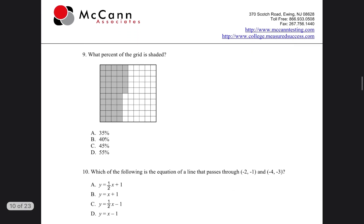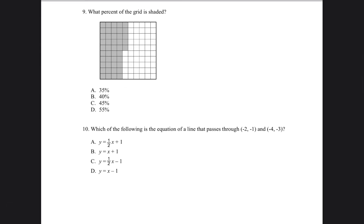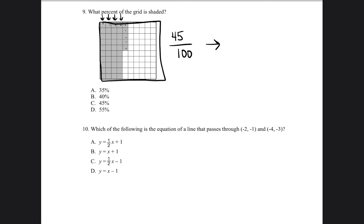Let's go to number 9, our last two questions: what percent of the grid is shaded? Each of these bars is equal to 10 — so 10, 20, 30, 40 — and then we count individually: 1, 2, 3, 4, 5. So it's 45. Whenever you see a block like this, it's a total of 100. So 45 out of 100 is the same as saying 45 hundredths as a decimal. Move the decimal place two places to the right and add a percentage sign — so it's 45%. Our answer is going to be C.